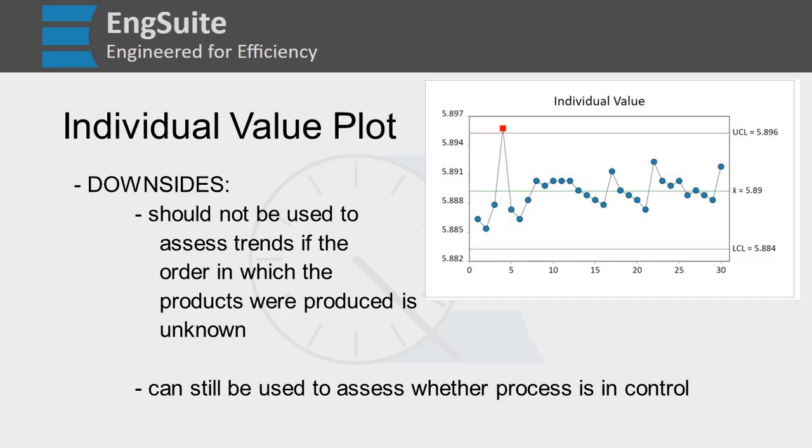Some downsides to an individual value plot: you cannot use it to assess trends if the order that products were produced is unknown. If you're doing random sampling by pulling from a box, that's not great because bad parts might sink to the bottom. A random sample means sampling from random times or set time intervals. You want it to be in order if you're using this. Even if they're out of order, you can still find out-of-control points. This is a downside for many of these charts because you can't assess trends if the order is unknown.